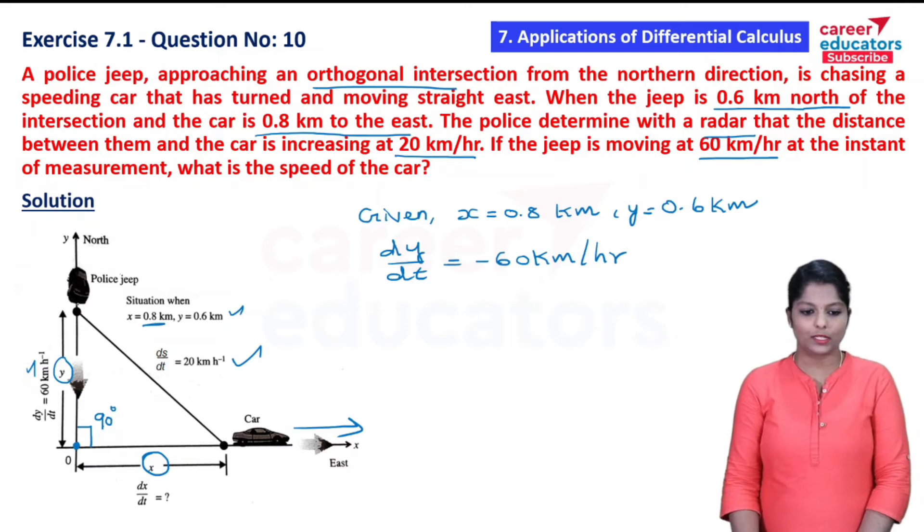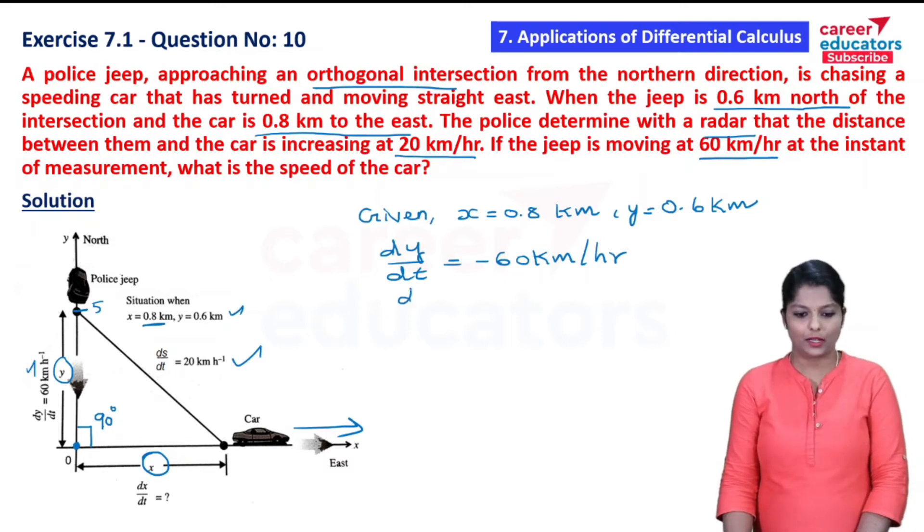because the police jeep will decrease the value of y as it approaches the intersection. So dy by dt is minus 60 km per hour. The question also gives ds by dt equal to 20 km per hour.